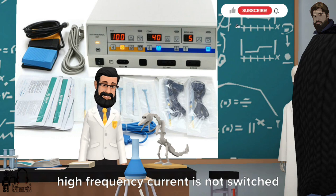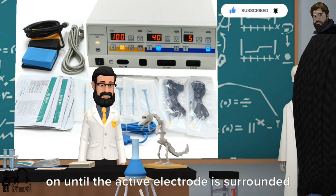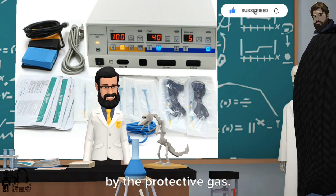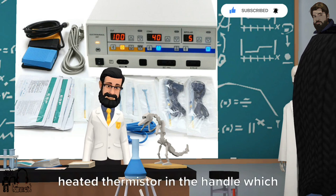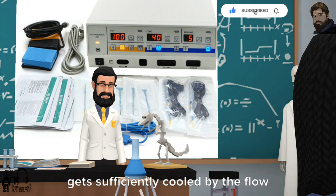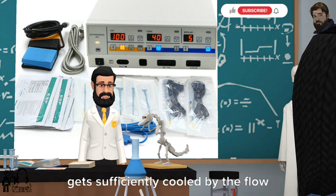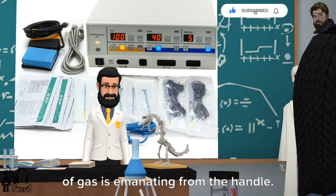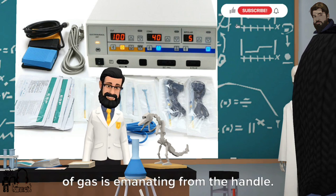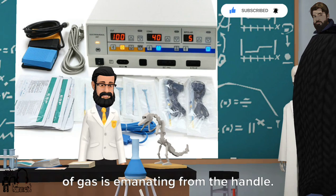An automatic control is incorporated in the unit which ensures that the high-frequency current is not switched on until the active electrode is surrounded by the protective gas. This is achieved by using an electrically heated thermistor in the handle which gets sufficiently cooled by the flow of protective gas. This ensures an adequate stream of gases emanating from the handle.